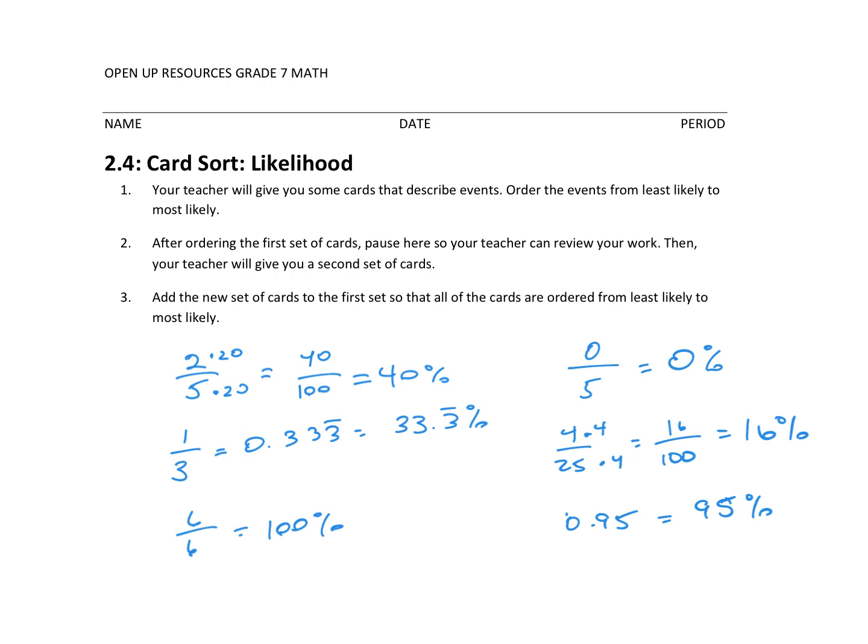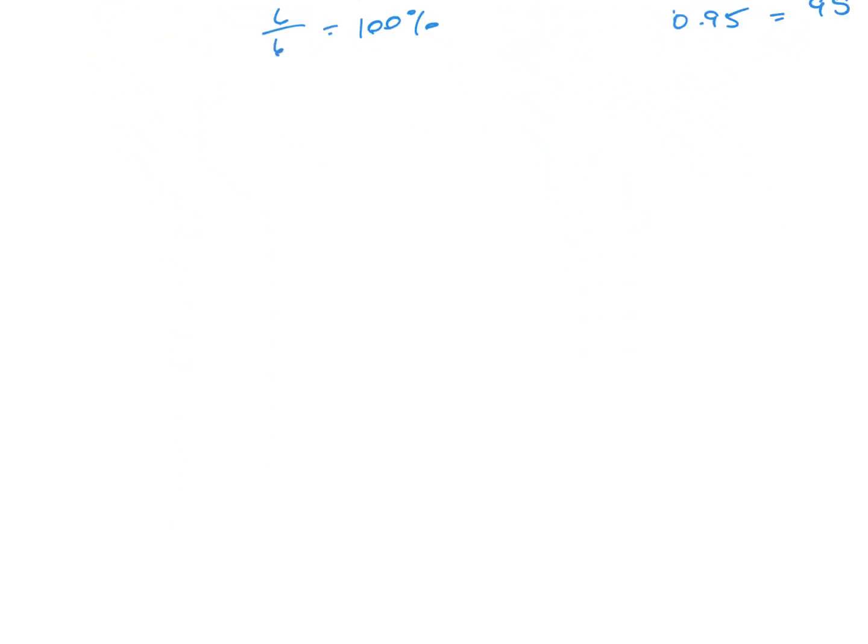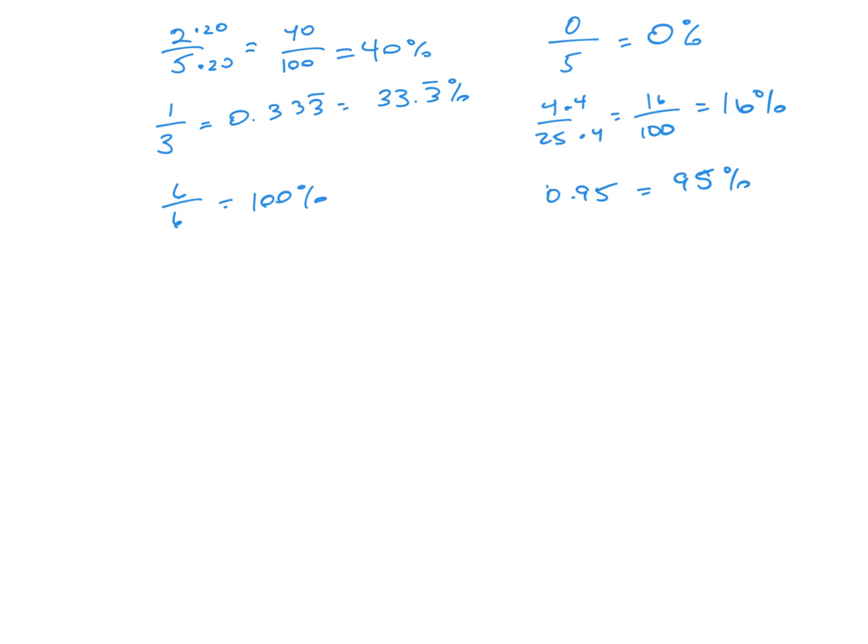So, some things I want to point out is some vocabulary words that we want to make sure that we know the terms of. So, the first one is chance experiment. Okay, this is basically something you can do over and over again, and you will more than likely have a different outcome each time. So, for example, spinning a spinner, rolling a number cube, those are all considered chance experiments.